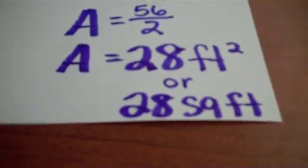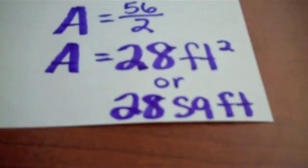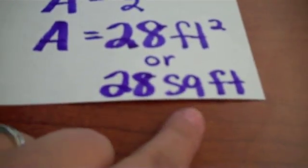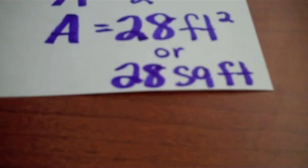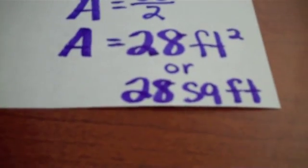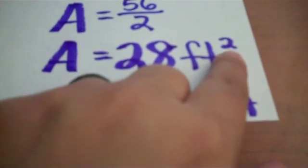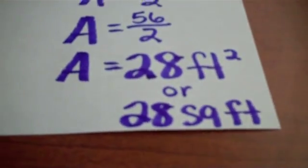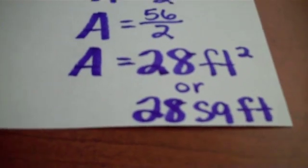A equals 28 feet squared or 28 square feet. Students must pick one of these two notations to express their area answers in. If their area answer does not include either the SQ or the little tiny two above the feet, their answer will be marked half wrong as putting that notation in is really, really important.